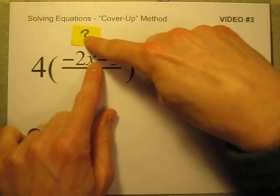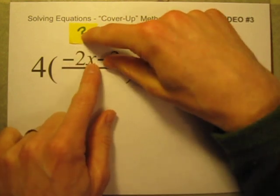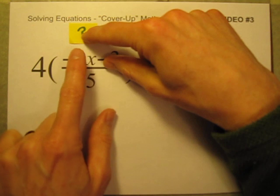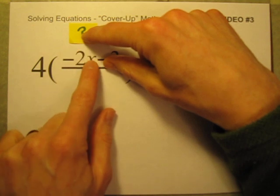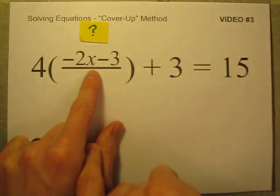Negative 2 times x must be equal to 18. Negative 2 times what is equal to 18? Negative 2 times negative 9 is equal to 18. So in this case, x must be negative 9.